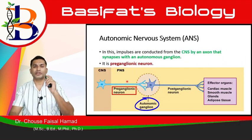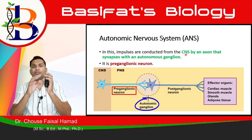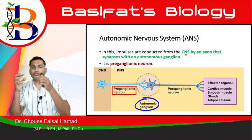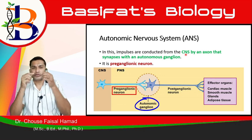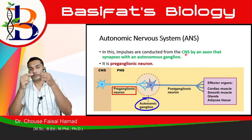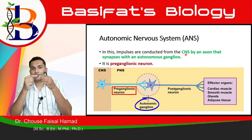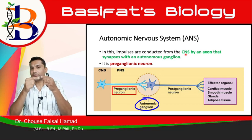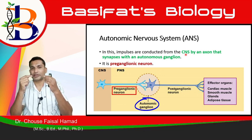In the autonomic nervous system, neurons connect with each other. One neuron can connect to another neuron via a synapse. A synapse is the gap where one neuron ends and another neuron begins — that gap is the synapse. As we saw in the previous video, this can be a monosynaptic or polysynaptic synapse.